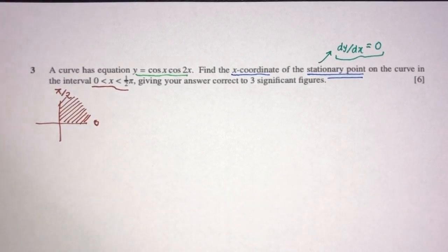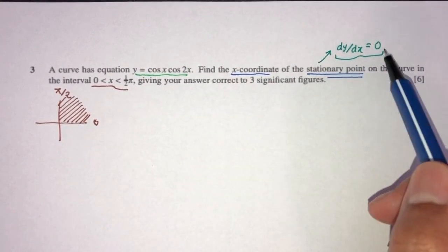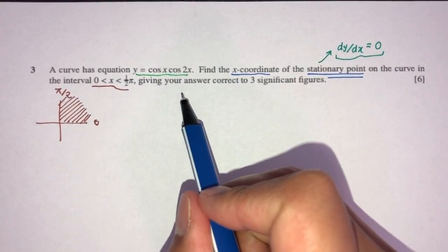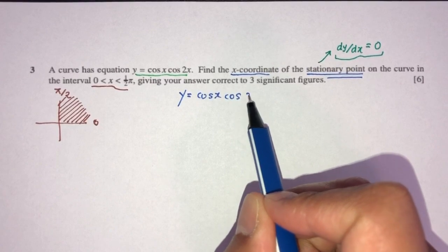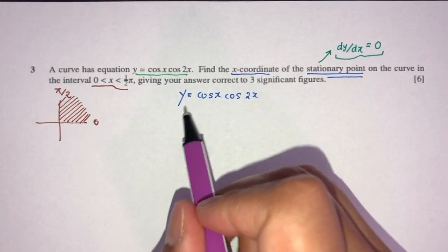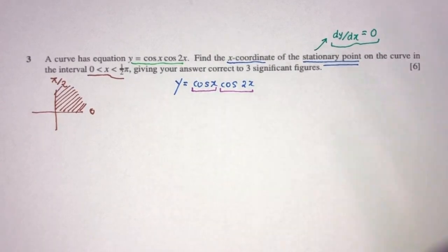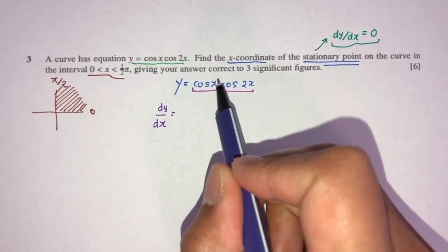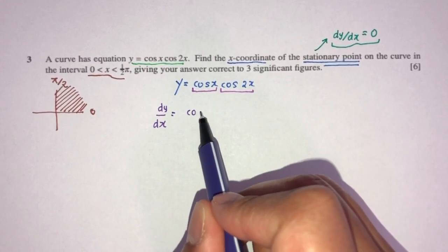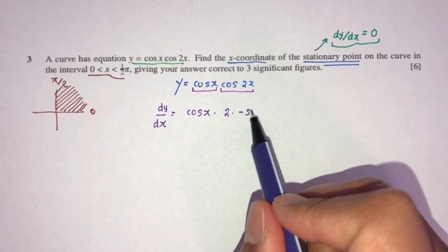Let's proceed and find dy/dx. So here we have y equal to cos x times cos 2x. You can clearly see this is a product — this times this — so we have to use the product rule. dy/dx will be: leave the first one as is, multiply by the derivative of the second, which becomes minus 2 sine 2x, plus leave the second one as is and multiply by the derivative of the first, which is minus sine x.